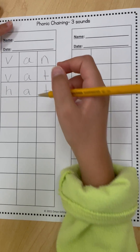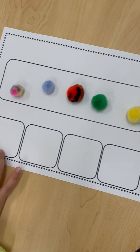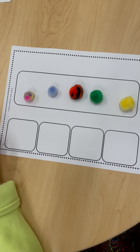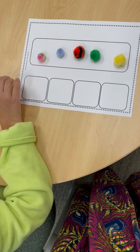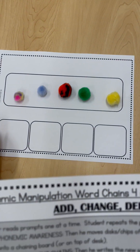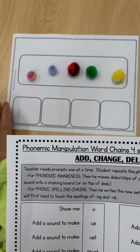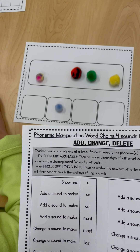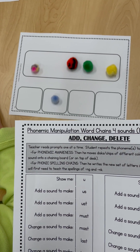Now we'll show you how to use this with phonemes. No letters involved. Show me a. A. Good. Add a sound to make us.